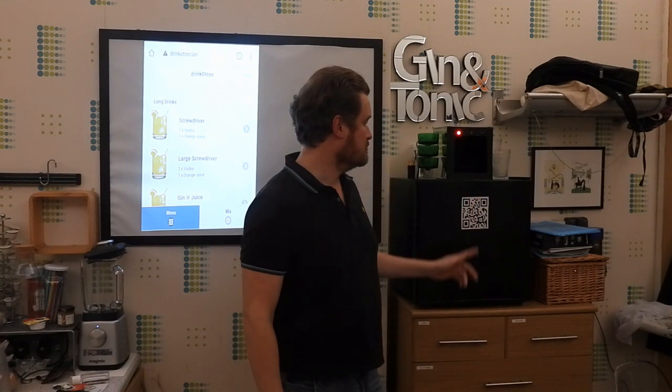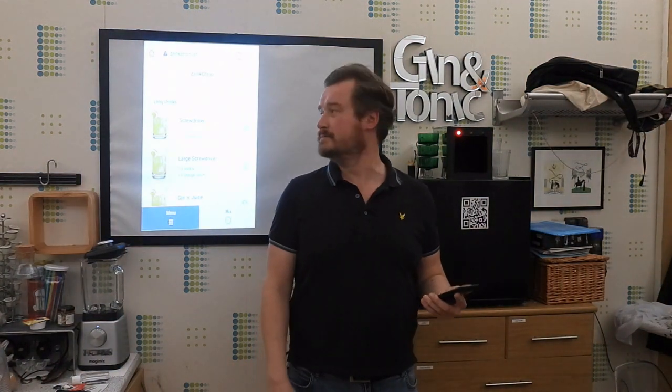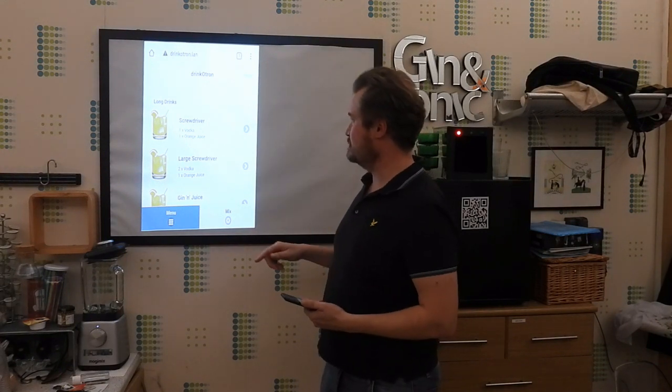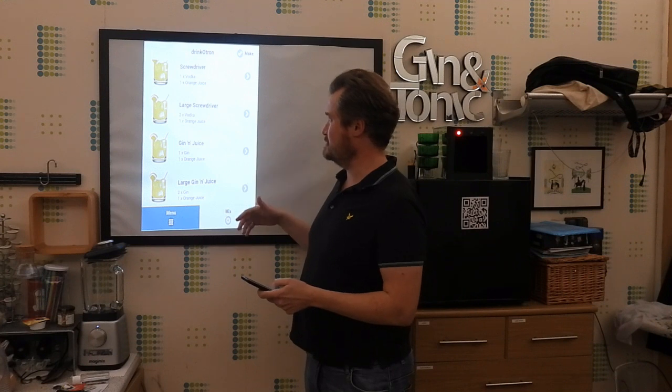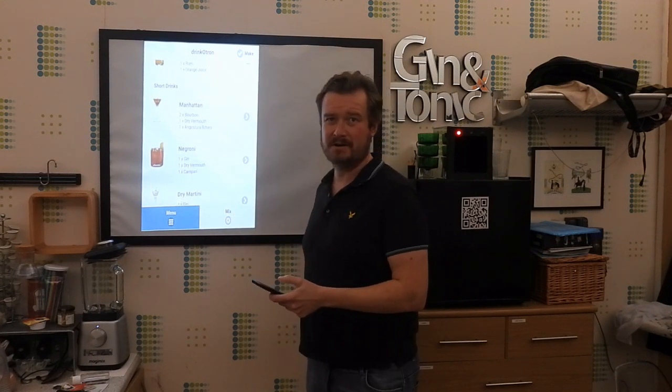So first of all what you need to do is scan the QR code and that will bring up a website on your phone, on your smartphone here. Now I've got my smartphone projected up on here at the moment so this is the website that it brings up and what you can see here is your menu basically. So these are all the cocktails that the cocktail maker can actually make.